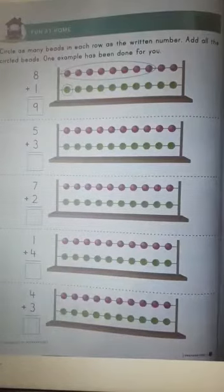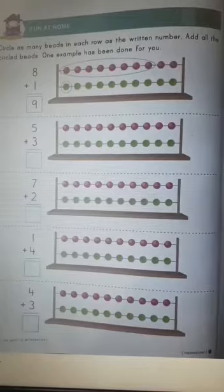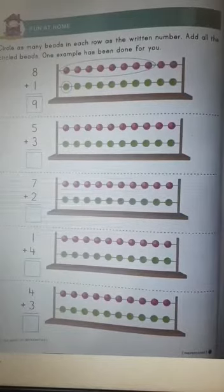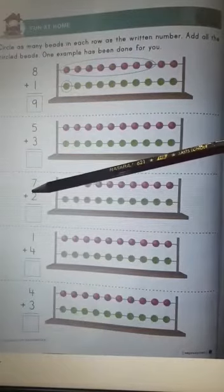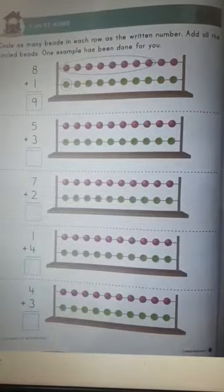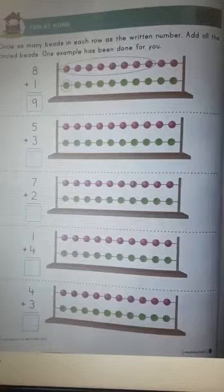A very good morning everyone. Fun at home. Circle as many beads in each row as the written number. So you can see many beads here and you can see numbers also written over here. Add all the circle beads. One example has been done for you.